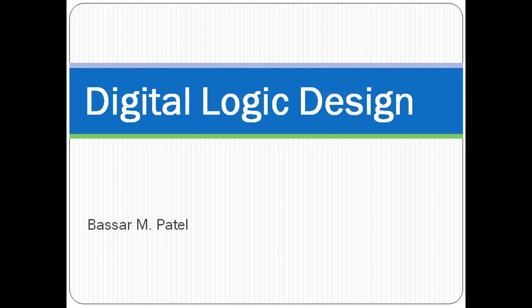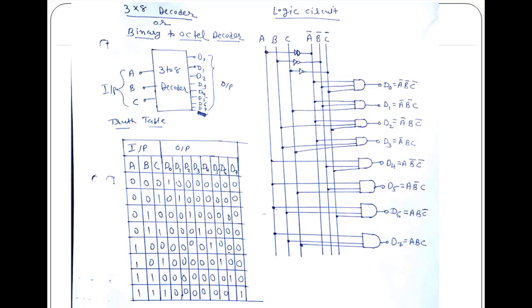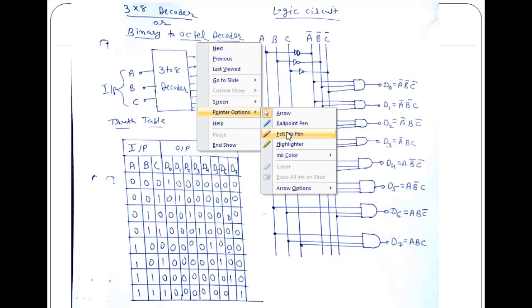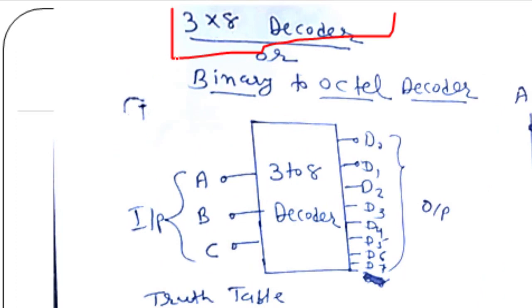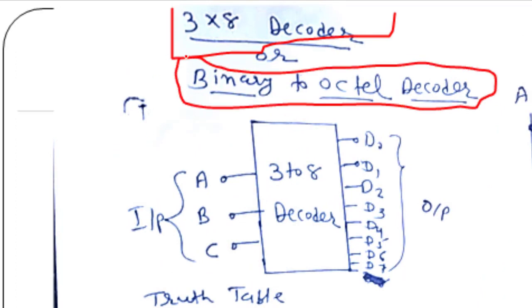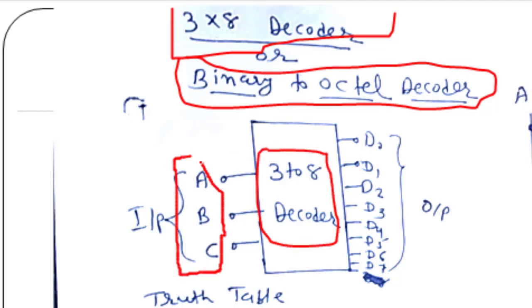Hello everyone. In the last lecture we discussed about decoders — we discussed the 2-to-4 decoder. Today we are going to discuss the 3-to-8 decoder, which is also known as a binary-to-octal decoder. This is a block diagram of the 3-to-8 decoder: it has three inputs A, B, and C, and it has eight outputs from D0 to D7.